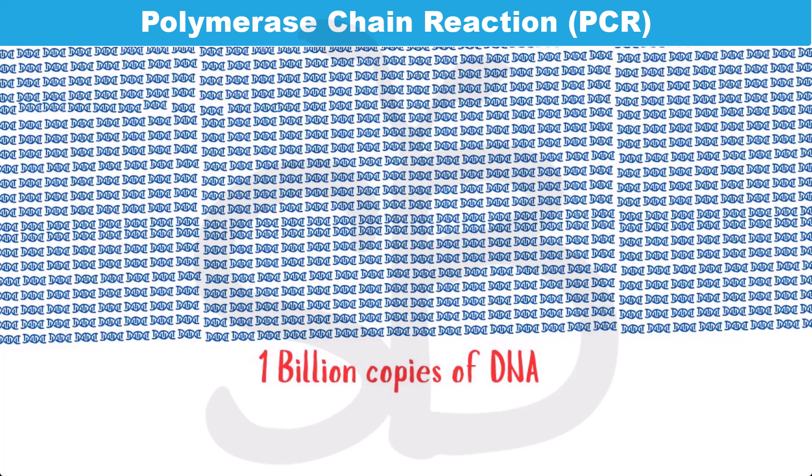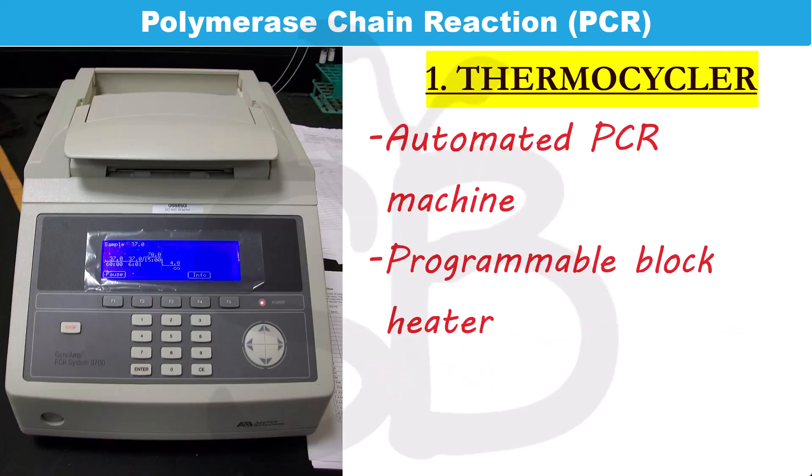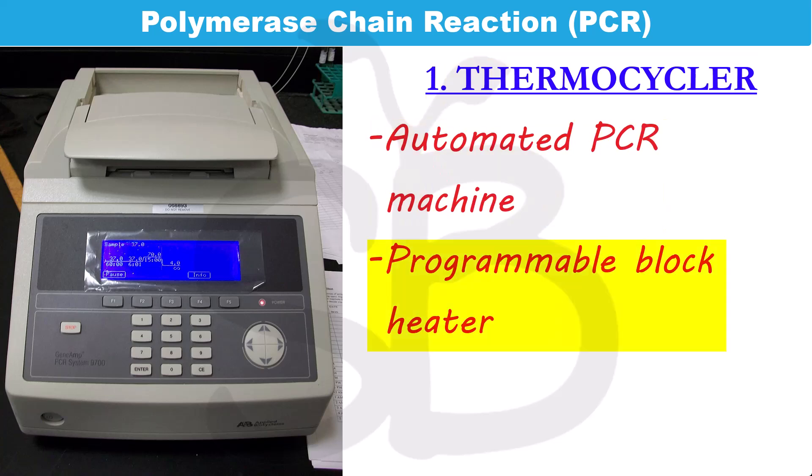We need a thermocycler. A thermocycler is an automated PCR machine — it is a programmable block heater used to cycle through the temperatures required for PCR.